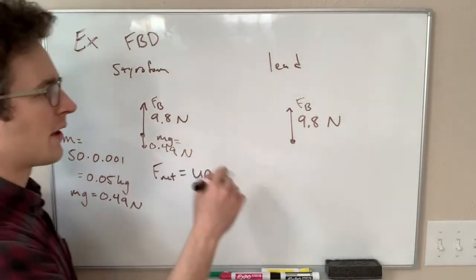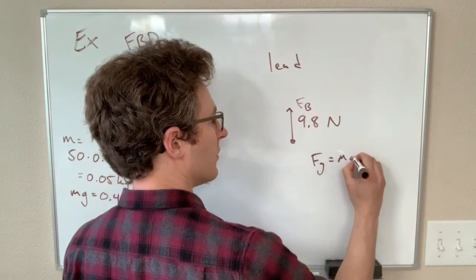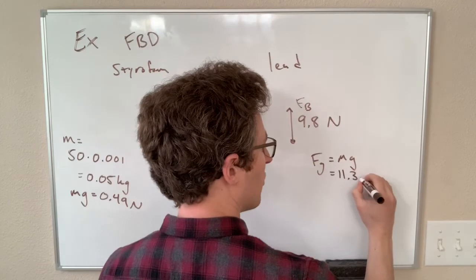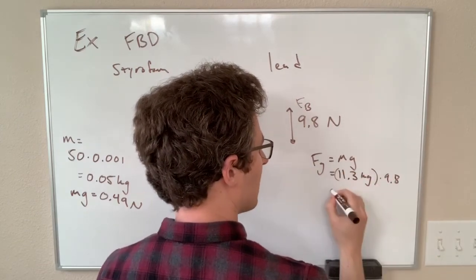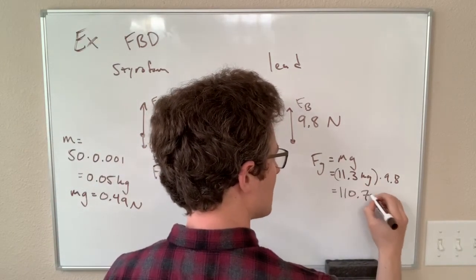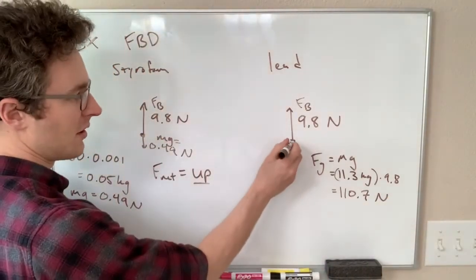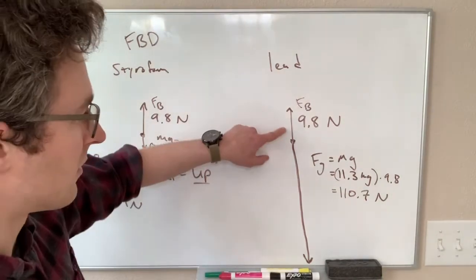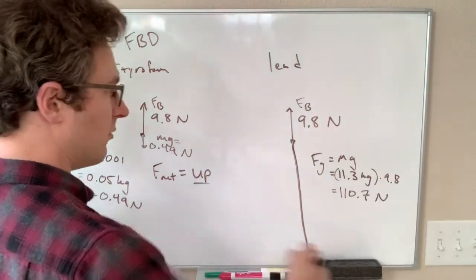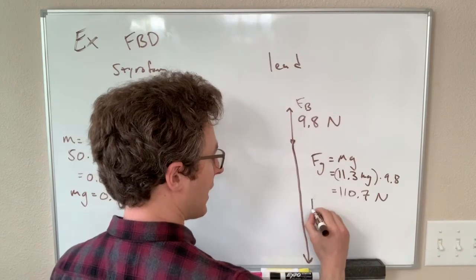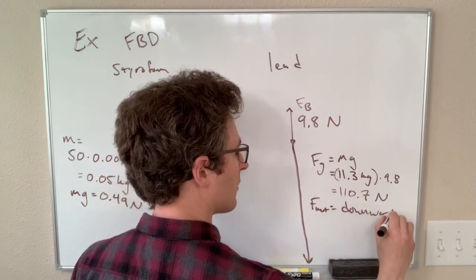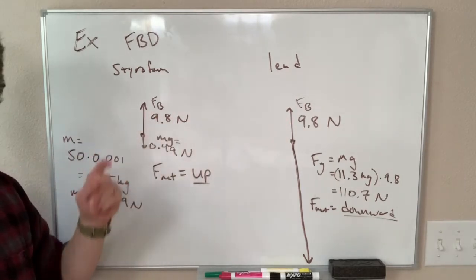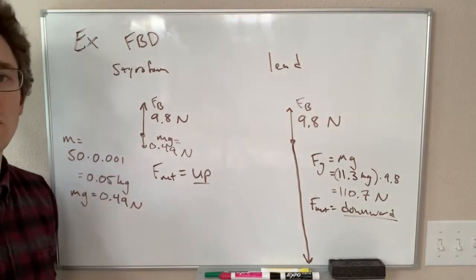For the lead, our force of gravity is still mg. Our mass is 0.001 times 11,300, giving us 11.3 kilograms, times 9.8, so this gives us a downward gravitational force of about 111 newtons. If we're keeping our vectors to scale, this force vector is going to be off the screen — it is much, much bigger than the upward buoyant force. So for the lead, we end up with a net force that is large and downward. The difference in behavior between the styrofoam and the lead has nothing to do with the buoyant force by itself — it only has to do with the relative size of the buoyant force compared to the downward force of gravity.